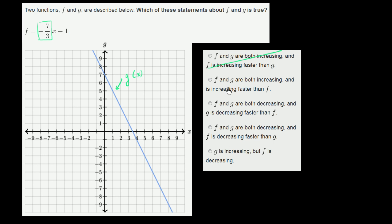f and g are both increasing. Well, that's definitely not right. So we know that both f and g are decreasing. So this first choice is they're both decreasing, and g is decreasing faster than f.